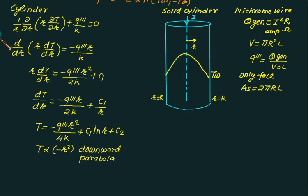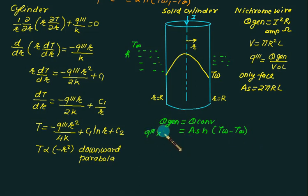If this wire is surrounded by fluid which is at temperature T infinity and heat transfer coefficient is h, then according to law of conservation of energy, the heat generated must equal to heat convected. Heat convected is given by surface area multiplied by h multiplied by tw minus T infinity. And q generation is q triple dash into volume. Use this equation to find out the wall temperature only.